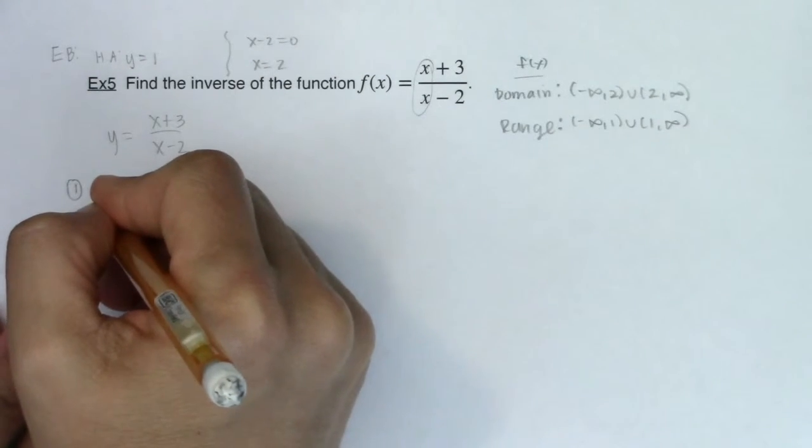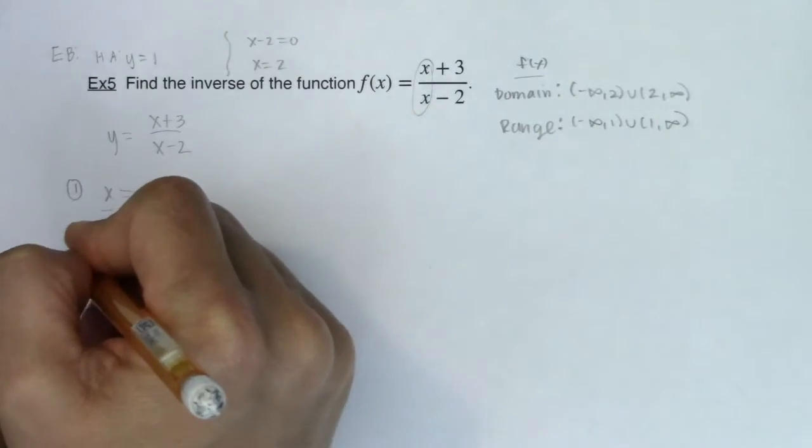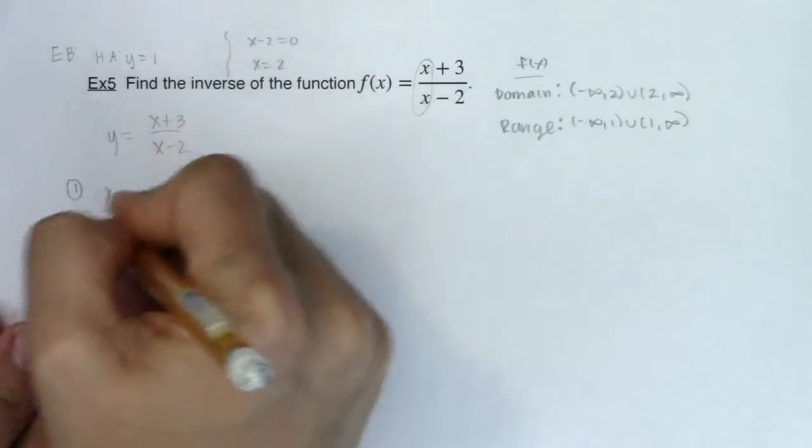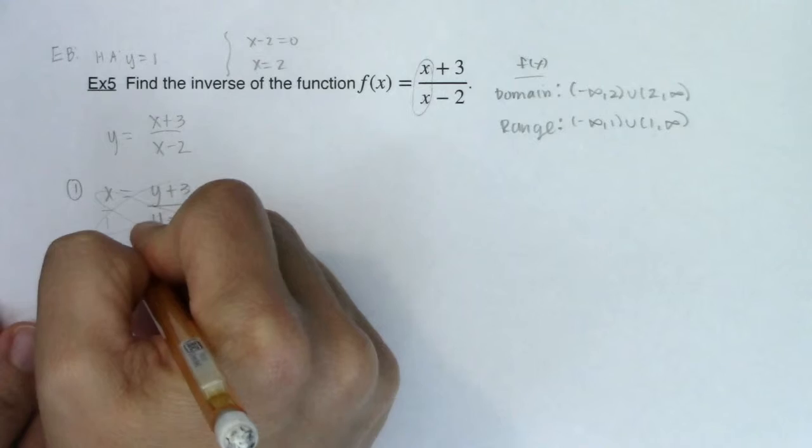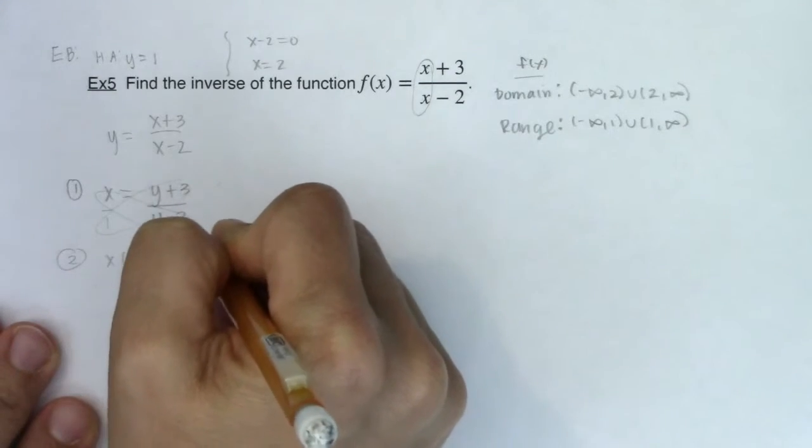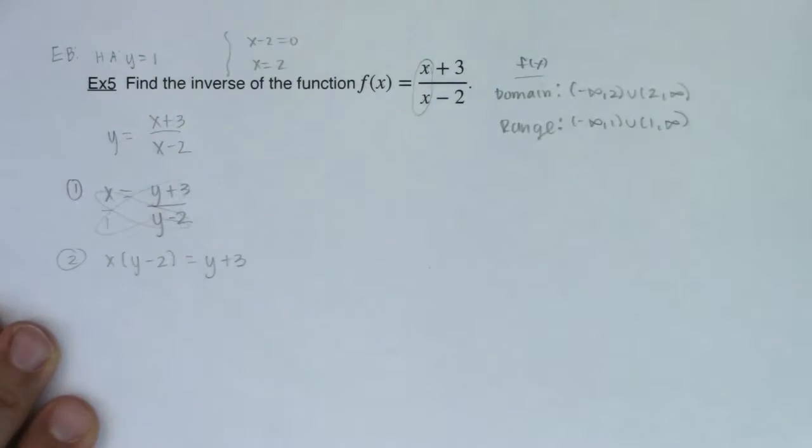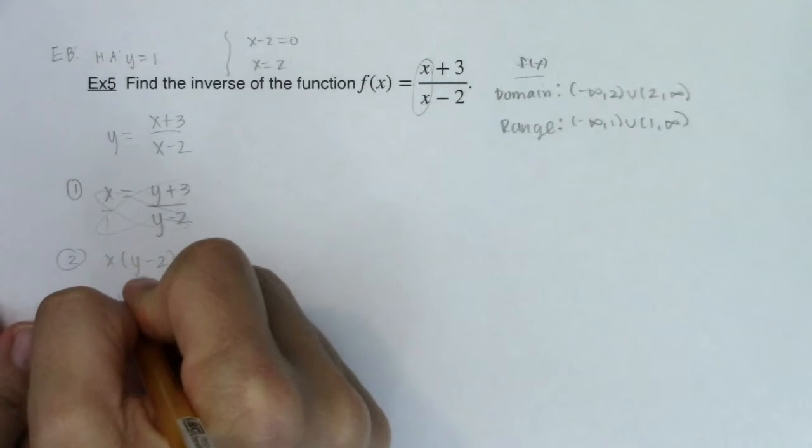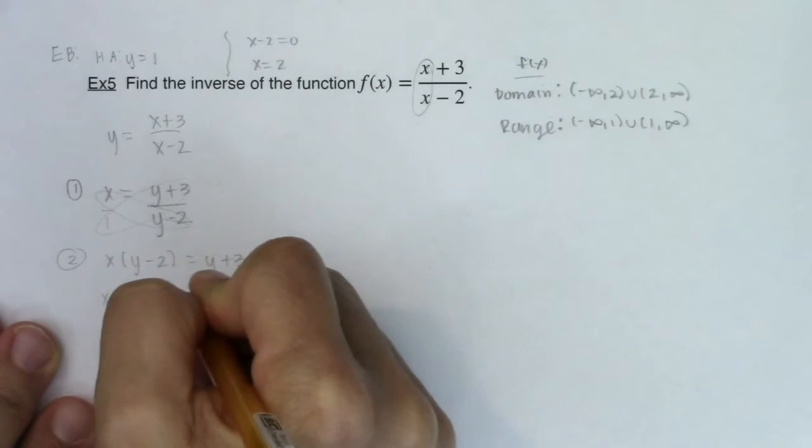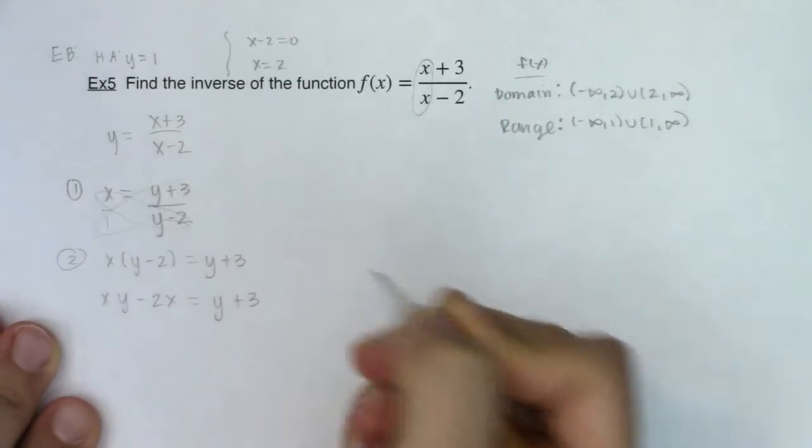We have x will be equal to y plus 3 over y minus 2. And from here on in, my whole goal is to solve for this new y variable. I'm going to go ahead and cross multiply. Alright, so as I head to step 2, let me cross multiply this. It looks like I have x times y minus 2, equaling y plus 3. Alright, so let's distribute a little. I have xy minus 2x, equaling y plus 3.